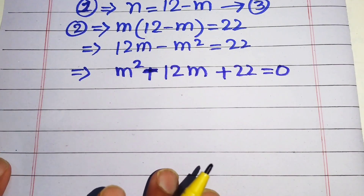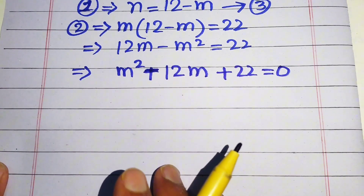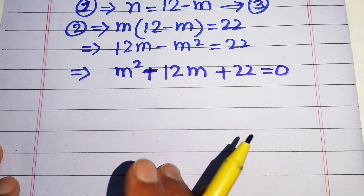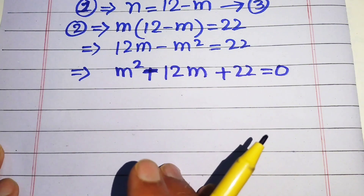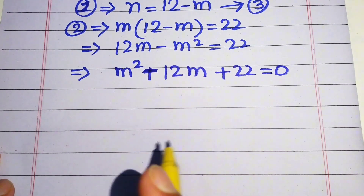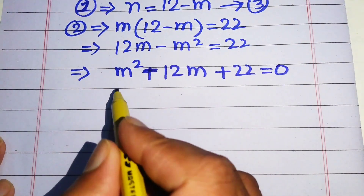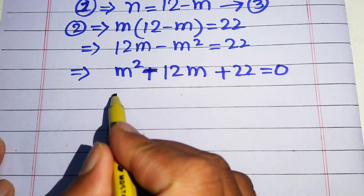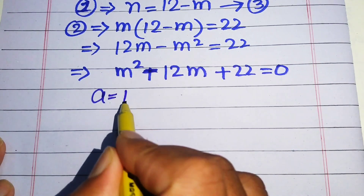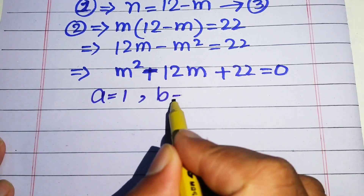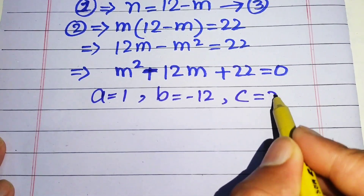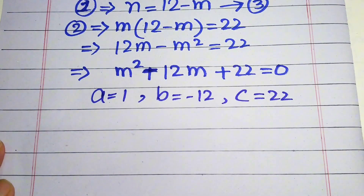We now have a quadratic equation in the variable m. We can make factors or use the quadratic formula to solve it. The coefficients are a equals 1, b equals minus 12, and c equals 22.